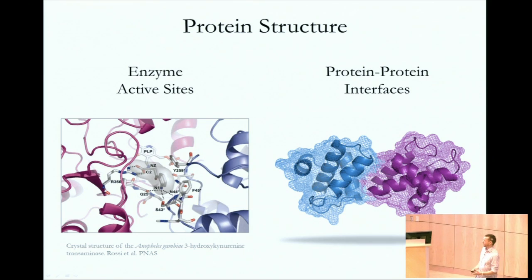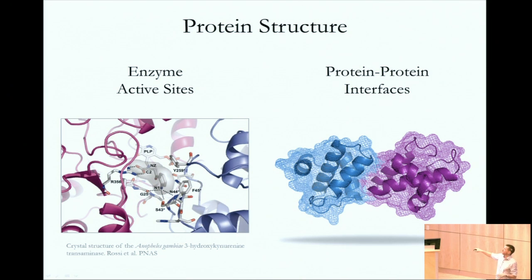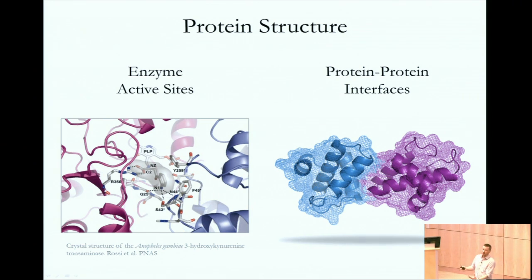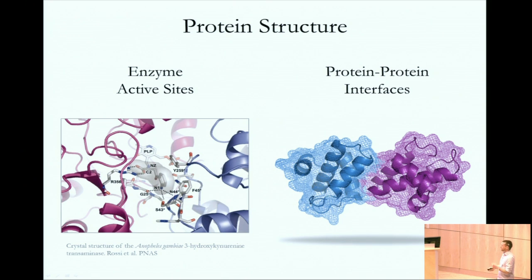So why do we bother? Nature happens in three dimensions. You need to know what's going on in real space to understand things like active sites of enzymes. Detailed, high-resolution knowledge of structure is really important when you're looking at how enzymes work and what an active site actually looks like. We're talking absolutely tiny scales. And to understand not just how enzymes work, but also how to interfere with that — in disease states, you might want to know how to put a drug into that same spot, and you need a good idea of what that looks like in three-dimensional space.